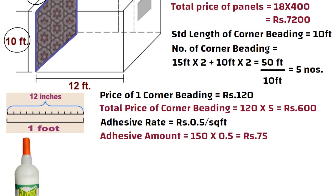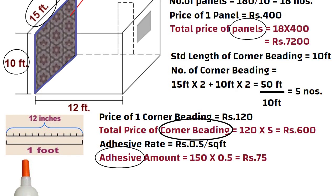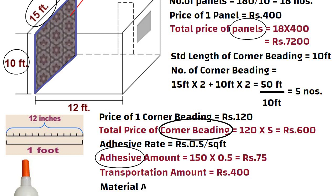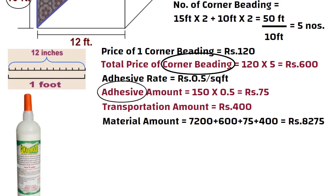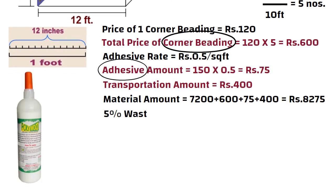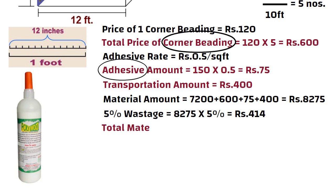Now let us add the transportation cost of all these materials, that is 400 rupees. So the total amount of materials is equal to 8275 rupees. Now let us consider 5% wastage on this, so the total amount of materials including wastage is equal to 8689 rupees.